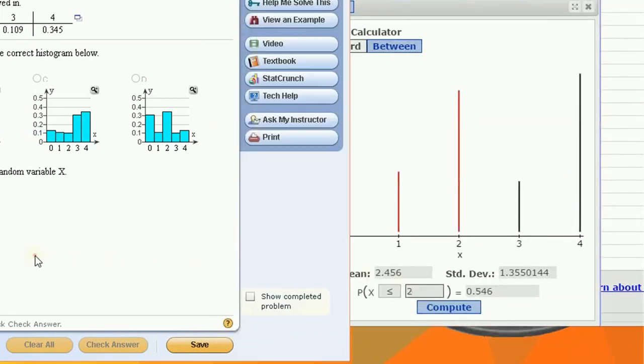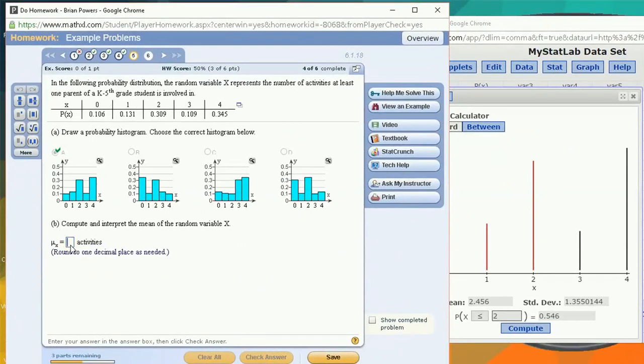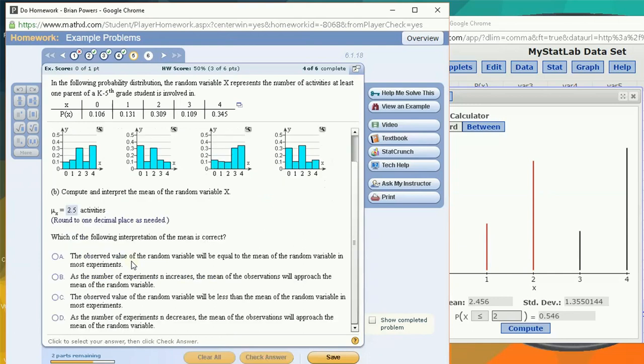The mean is mu of x. So I'm going to just type that in to one decimal place, that's 2.5. And the standard deviation is over here.